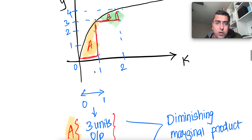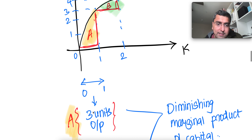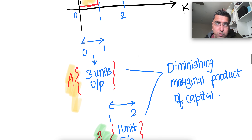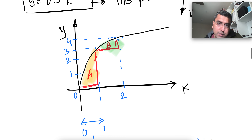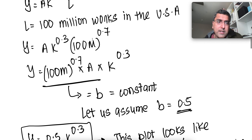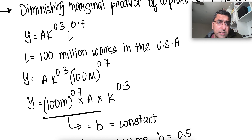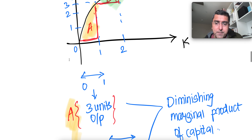What does this mean? If we add one unit of capital from 0 to 1, we get three units of output. But adding one more unit from 1 to 2 only gives one unit — the slope is reducing, getting smaller and smaller. So if you keep adding more capital, output will not increase at the same rate as it did for the first unit — the returns diminish. The same is true for labor: we can substitute capital as the fixed factor, and the same graph applies. That's why we say this has diminishing marginal product of capital and labor.